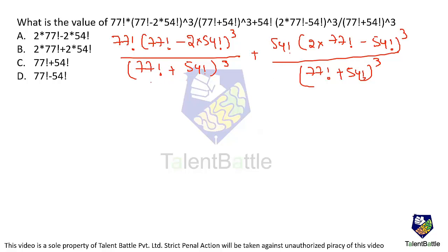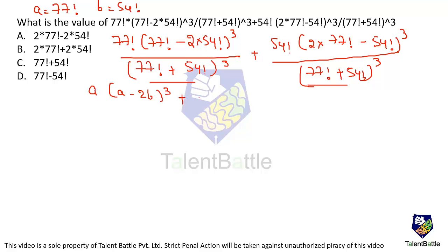The denominators here are the same, so we can take it as a common denominator. We can't easily compute 77! directly, so let's substitute: let a = 77! and b = 54!. Substituting a and b, the numerator becomes a(a − 2b)³ + b(2a − b)³, and the entire denominator is (a + b)³.